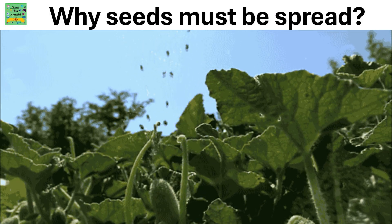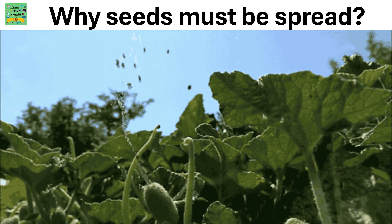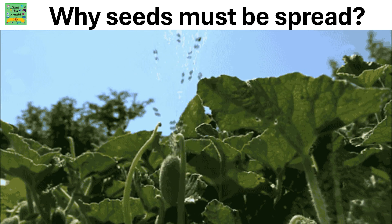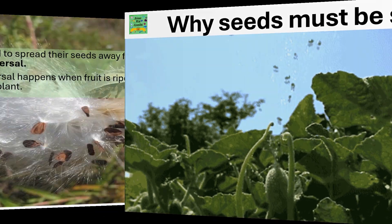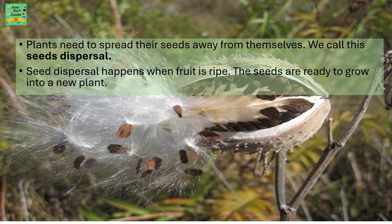Now, let's talk about why seeds must be spread. Plants need to spread the seeds away from themselves — this is called seed dispersal. Seed dispersal happens when fruit is ripe and the seeds are ready to grow into a new plant.